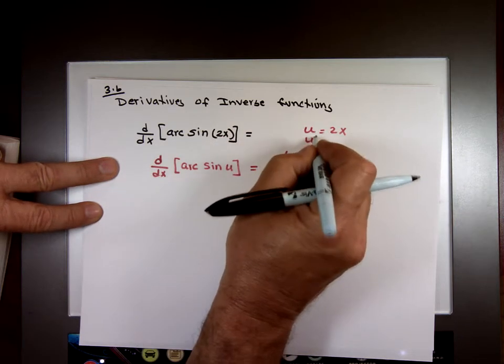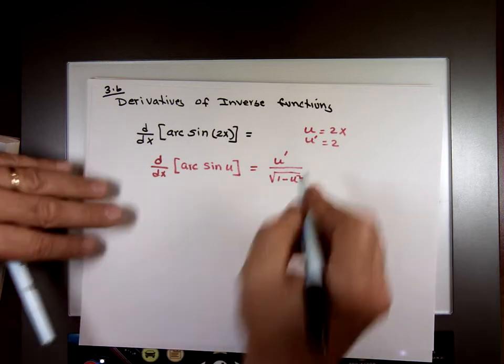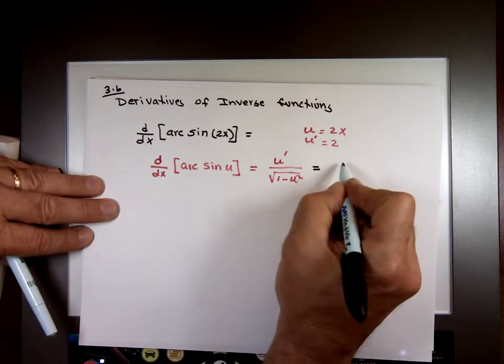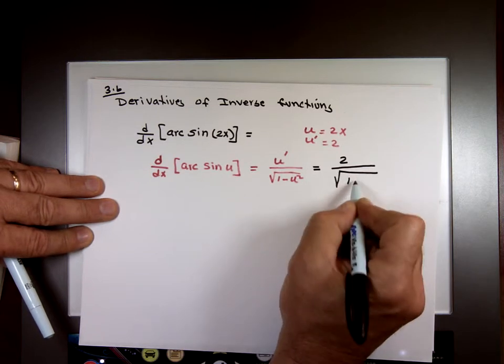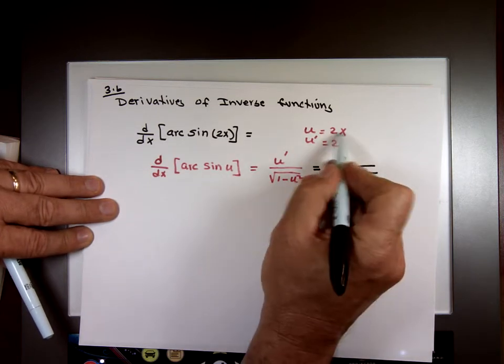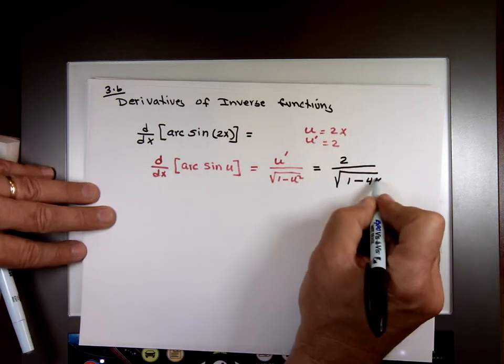So what's the derivative of that? 2. So plug in the information into this, and your answer is going to be 2 divided by the square root of 1 minus, now square the 2x. What's 2x the whole thing squared? 4x squared.